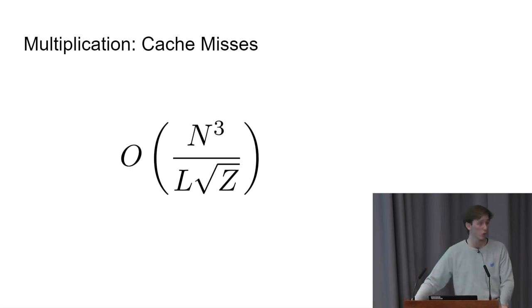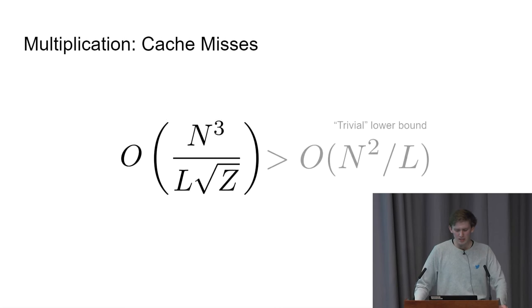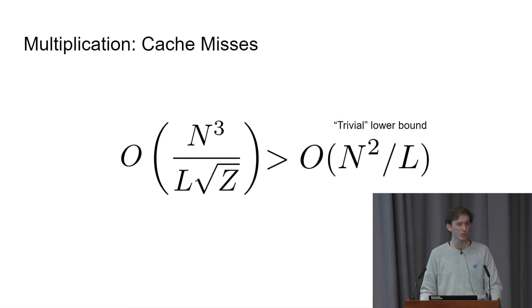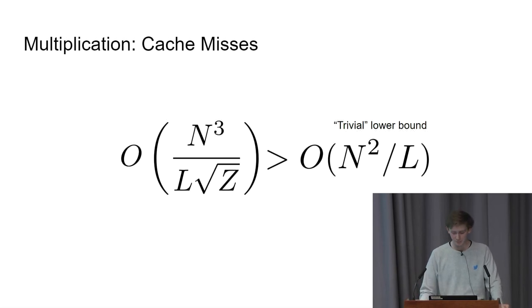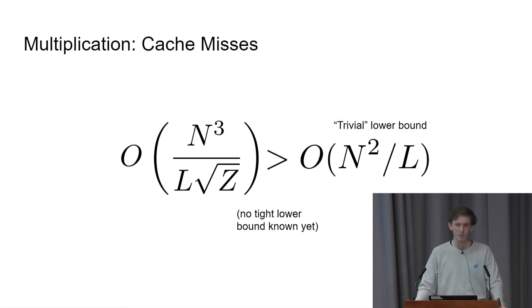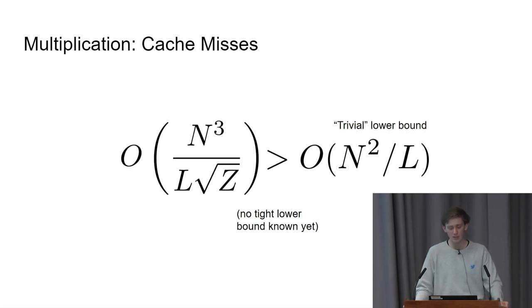This isn't quite matching the trivial lower bound. Like with matrix transposition, we can load all matrices exactly once in order N squared over L time, and we must fully read the matrices to perform multiplication — so the minimum lower bound is N squared over L. But it's not actually known what the exact tight lower bound on matrix multiplication in terms of cache misses is. Just as we don't know if matrix multiplication can be done in order N squared time, we don't know if it can be done in order N squared over L cache misses.